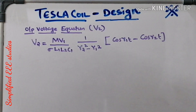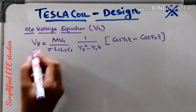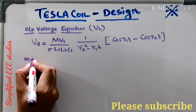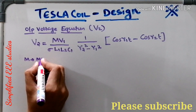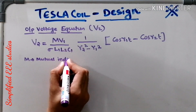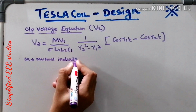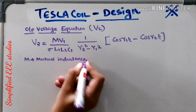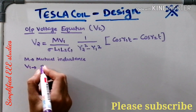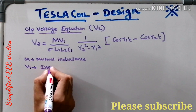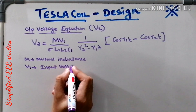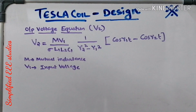Now let us see what is M. M stands for mutual inductance. Also note that V1 stands for input voltage of the Tesla coil.